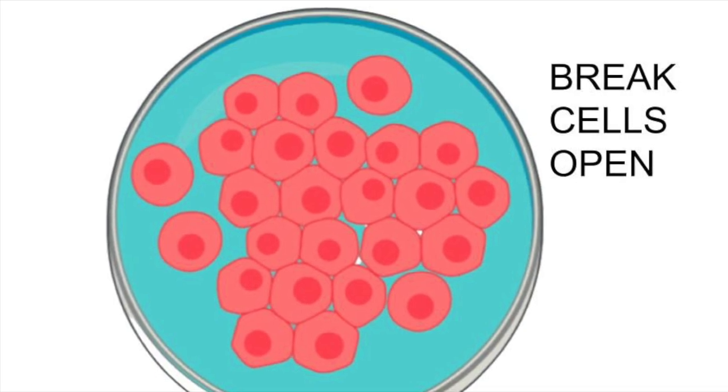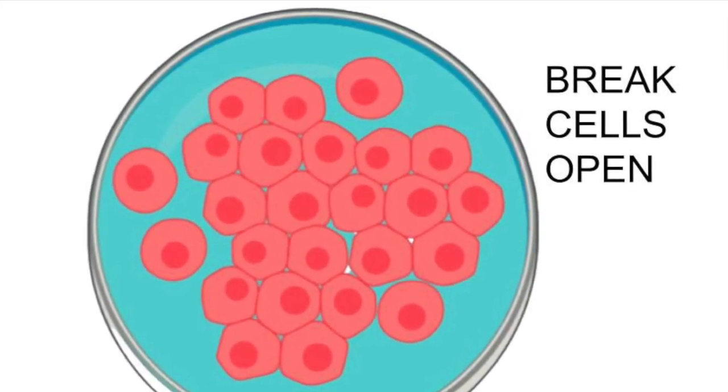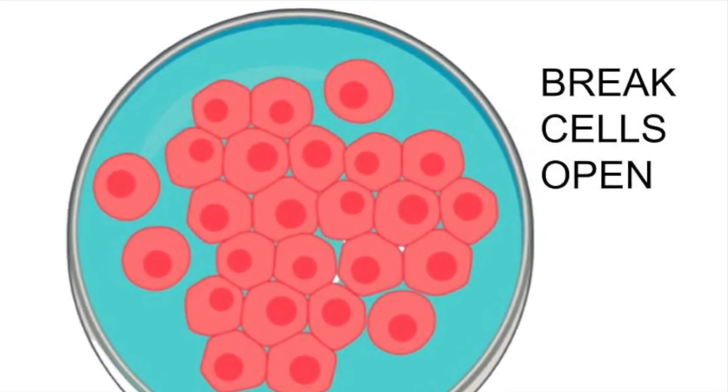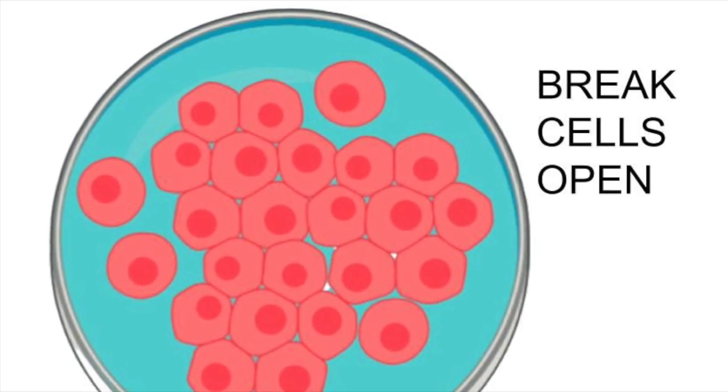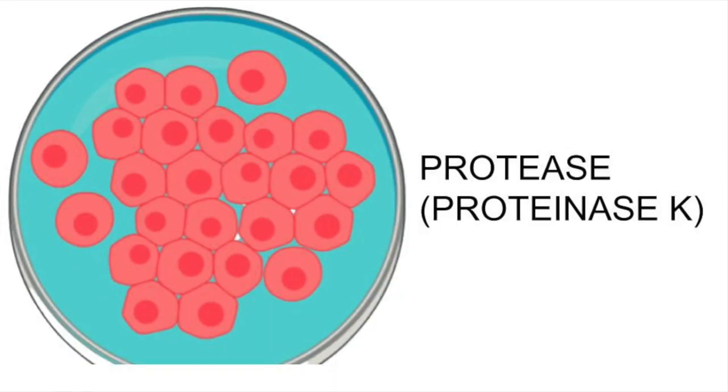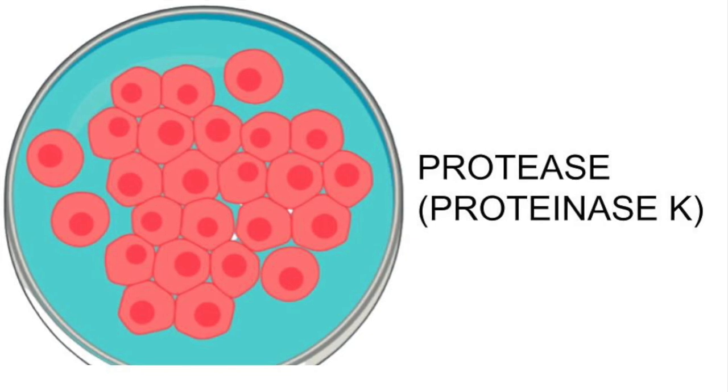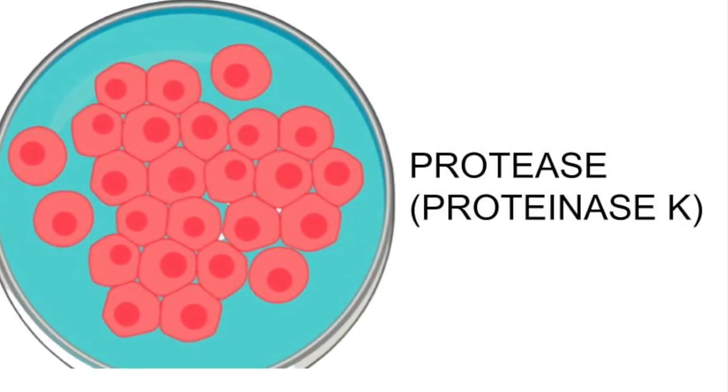The permeabilization process allows the contents of the cell to spill out. Once you've got spillage of the contents of the cell, you want to remove the protein fractions of the cell, and this process includes addition of protease.